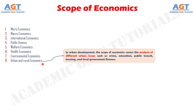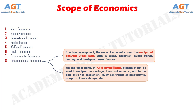Urban and Rural Economics: In urban development, the scope of economics covers the analysis of different urban issues such as crime, education, public transit, housing, and local government finance. On the other hand, in rural development, economics can be used to analyze the shortage of natural resources, obtain the best price for production, study constraints of productivity, adapt to climate change, and more.